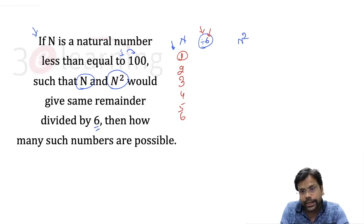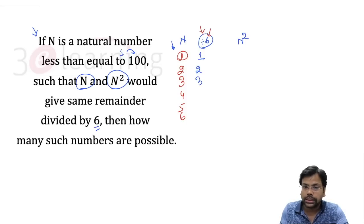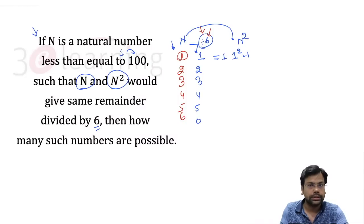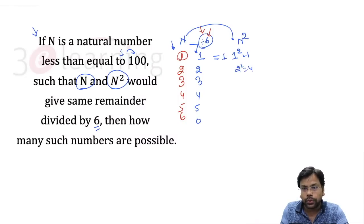When 1 is divided by 6, remainder is 1. Remainder for 2 is 2, for 3 is 3, for 4 is 4, for 5 is 5, and for 6 remainder is 0. Now for n²: 1² = 1, divided by 6 remainder is 1 — same, so I want this. 2² = 4, divided by 6 remainder is 4 — same, so I want this.